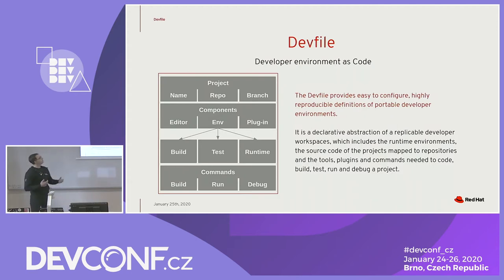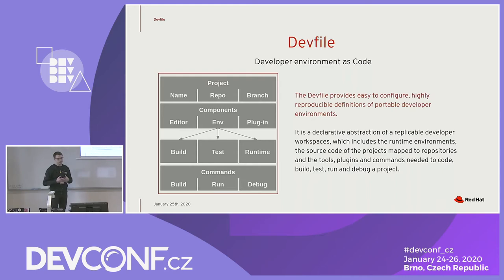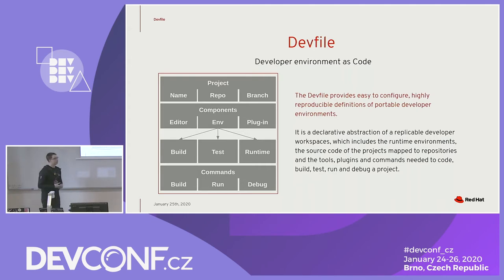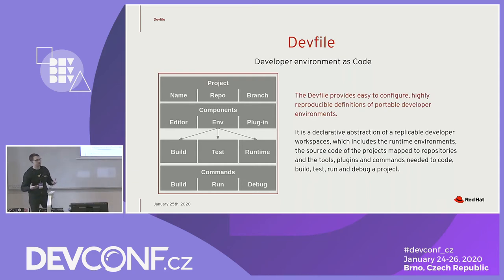Devfiles live in the devfile registry. A devfile is a YAML file that describes and defines the developer environment in Che. It contains three general parts. The first part is projects, where you can specify your project's source repository. This part is optional — if you don't want to clone a project when your workspace starts, you can skip this part and your workspace will be empty.